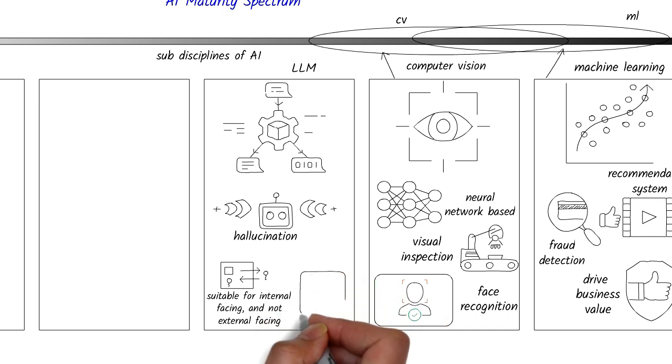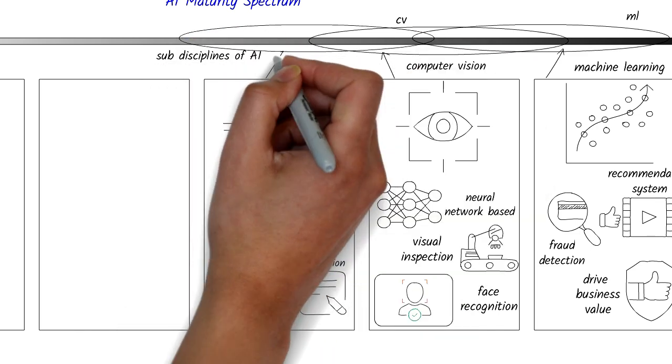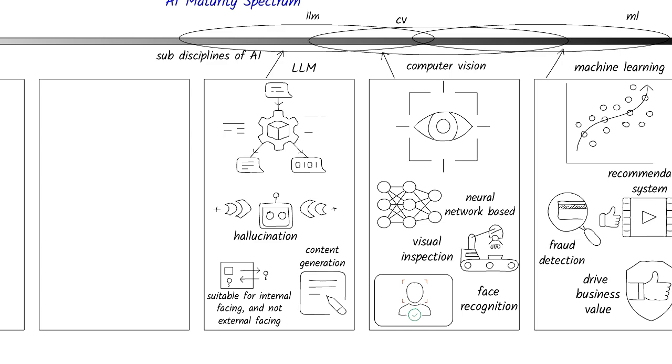For instance, companies are exploring generative AI to create marketing content, design products, and even compose music. The speed at which it can generate content is impressive, but accuracy is often questionable. That makes it both a groundbreaking tool and a potential risk, depending on where it's used. Here's where Gen AI is on the maturity spectrum.